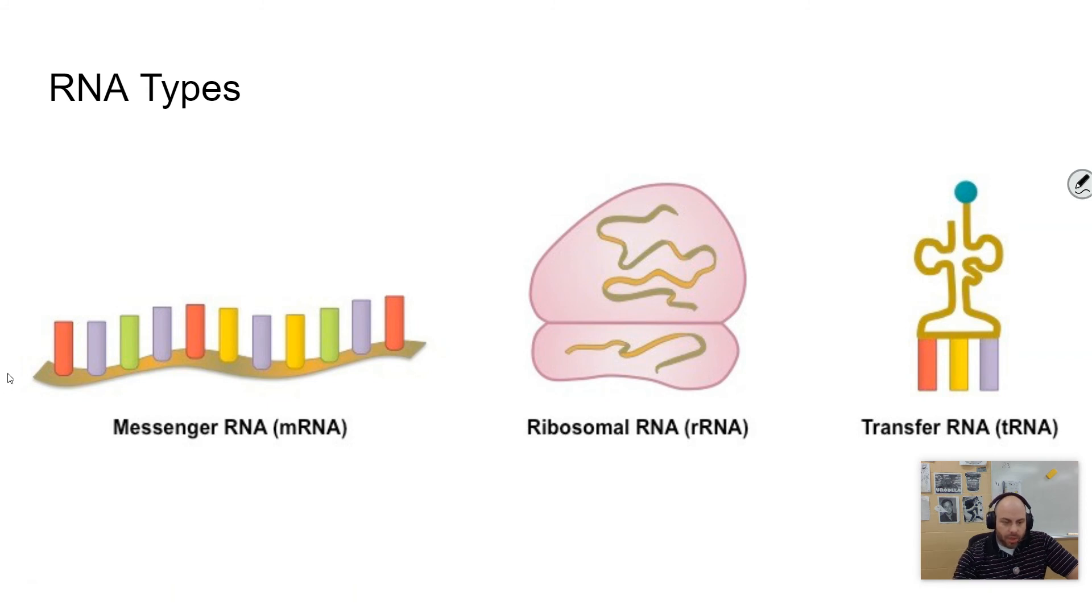So this mRNA is a temporary copy of a gene. It is broken up into three base units called codons. We'll talk more about that when we get to translation.